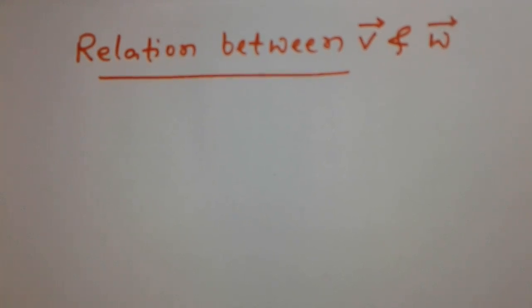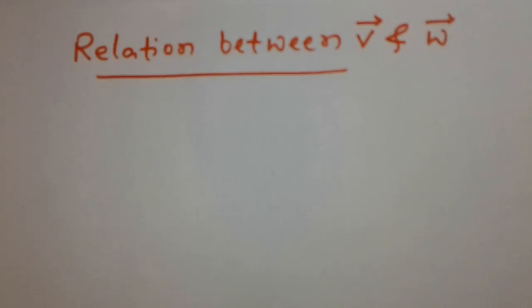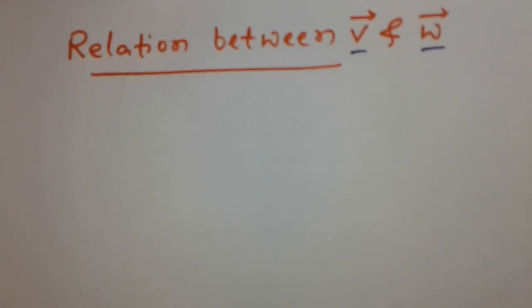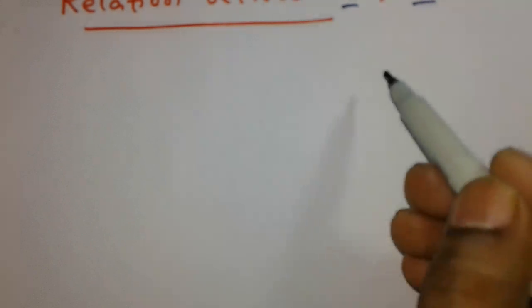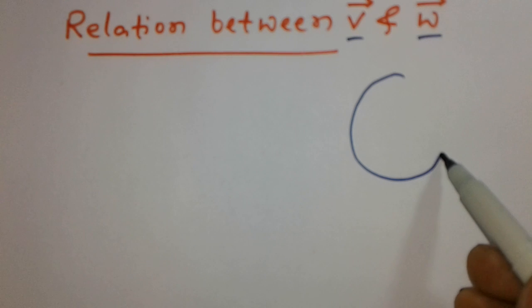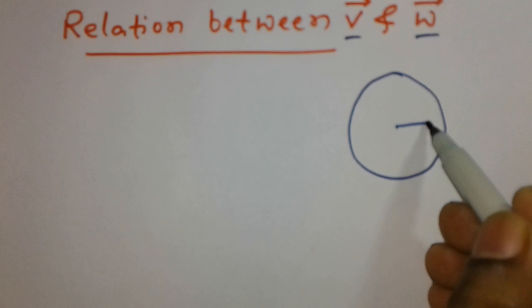Hello friends, today we study relation between V and Omega. V is linear velocity and Omega is angular velocity. First we see a body which is moving on the circular path of radius R.